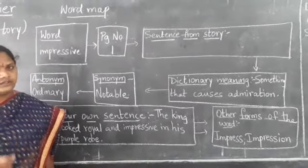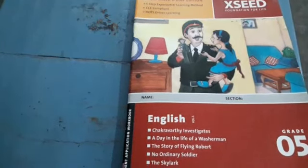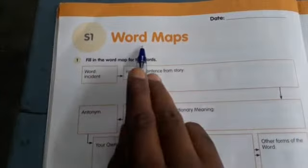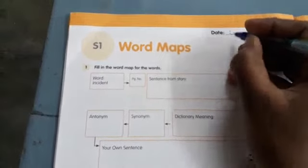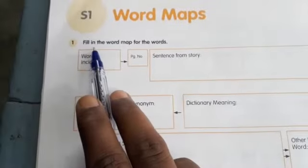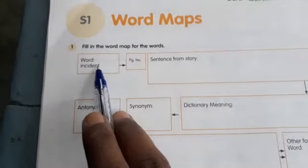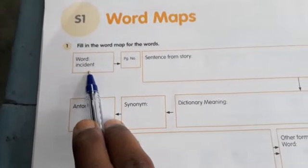We are going to write in the workbook, Block 6, S1 word maps. As you open, write the date: 28-9-2020. See the first question over here — fill in the word map for the words. Here they have given the word 'incident.'